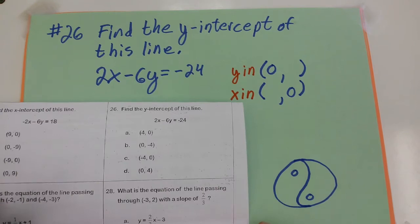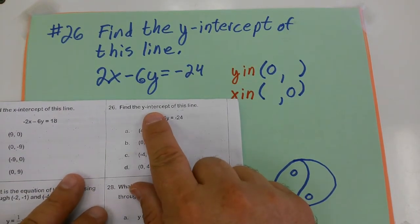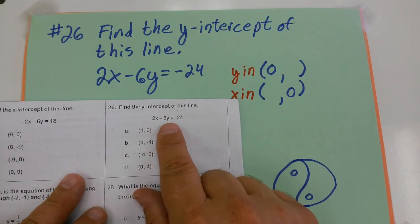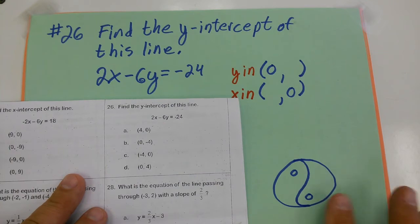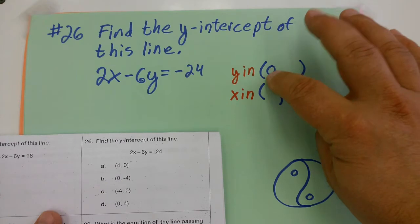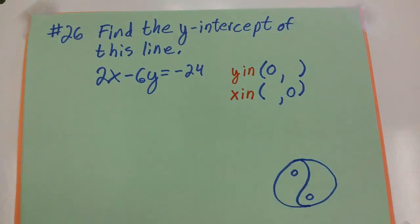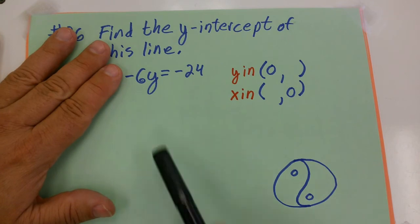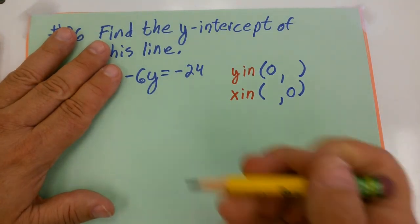Number 26 from the PERT practice test says find the y-intercept of this line. It gives it to me in standard form. Again, I'm going to use this yin-yang symbol. The y-intercept is going to have a 0 for the x-value. I just do the cover-up method again and cover up the x-value. That gives me a little tiny equation.